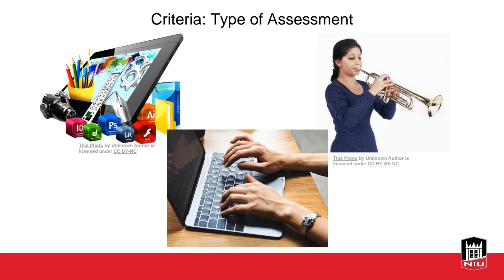Some ways that criteria may change based on the type of assessment: for an electronic presentation, we might assess for technical quality, aesthetics or design, visuals, and writing mechanics. For a written paper, we might assess content, organization, thesis statement, and writing conventions. For a musical performance, we might evaluate steadiness, breathing, appropriate instrument usage, interpretation, and accuracy. The type of assessment really determines what kind of criteria we use.